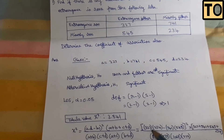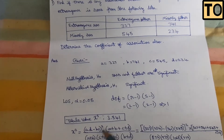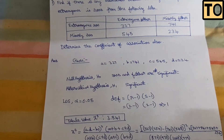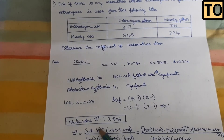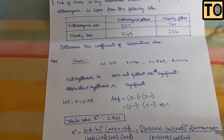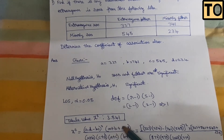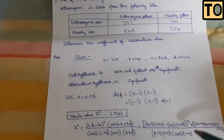The formula for the calculated chi-square value is: (ad - bc)² × (a+b+c+d) divided by (a+b)(c+d)(a+c)(b+d). In the numerator, we have (ad - bc) whole squared multiplied by the total N = a+b+c+d. The denominator consists of four marginal products: (a+b), (c+d), (a+c), and (b+d). Substitute the a, b, c, d values and solve.